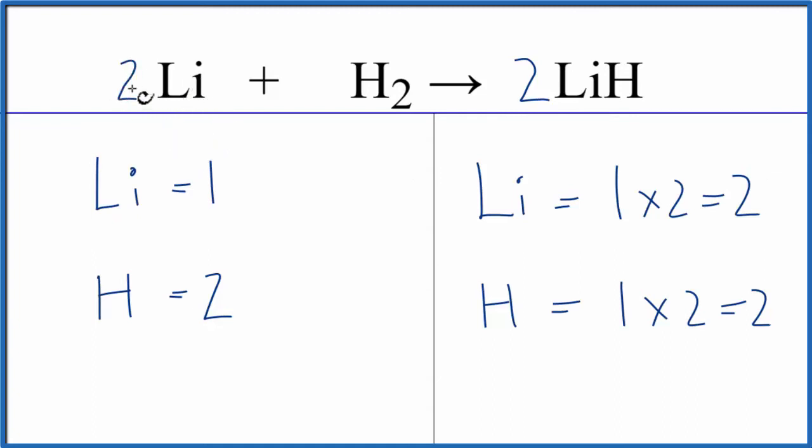Now we have the one times the two, that gives us two, and the lithiums are the same on both sides of the equation. So now everything's the same. We're done with this equation. It's balanced.